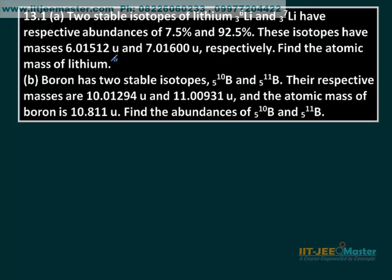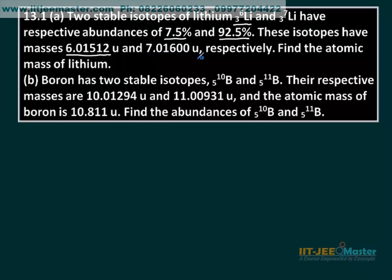13.1 A. Two stable isotopes of lithium — lithium-6 and lithium-7 — have respective abundances of 7.5% and 92.5%. These isotopes have masses 6.01512 atomic mass unit and 7.01600 atomic mass unit respectively. Find the atomic mass of lithium.